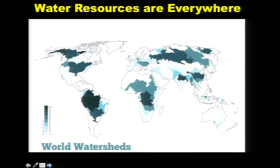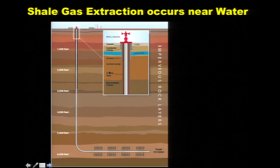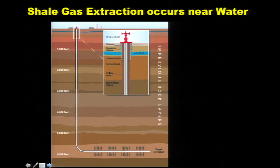There's a lot of water on the planet too — just about everywhere. If you look at the world from space, mostly you see water, but all that green stuff has water underneath it as well. So almost everywhere that you find shale, you're also going to find water. What this means is that our water resources and our shale resources — in fact, all of our energy resources — are co-located on the planet. So shale gas extraction is, of course, going to happen near water.